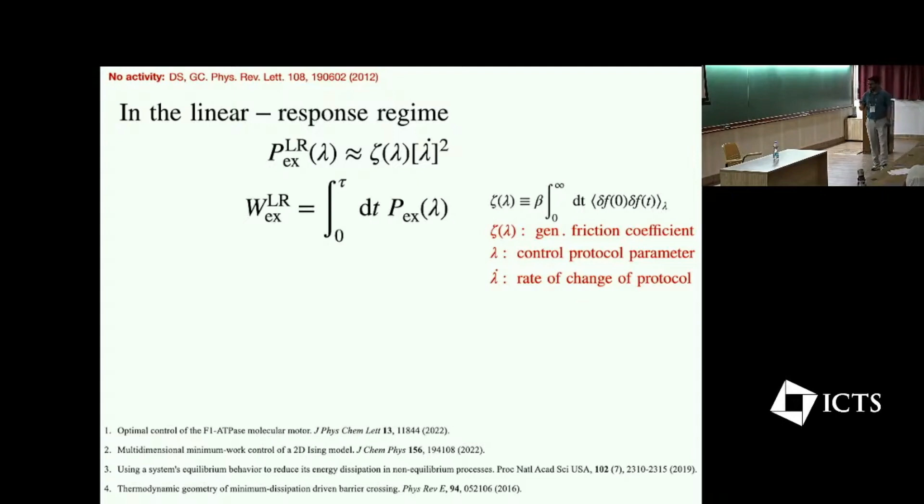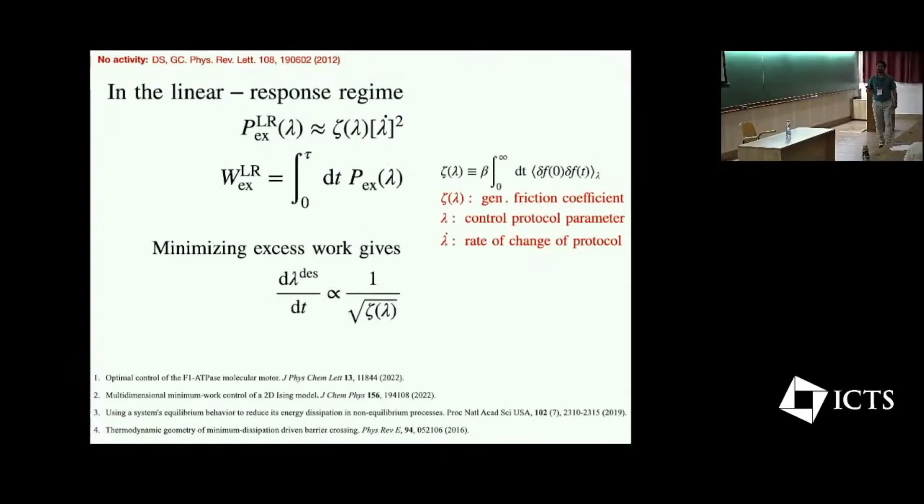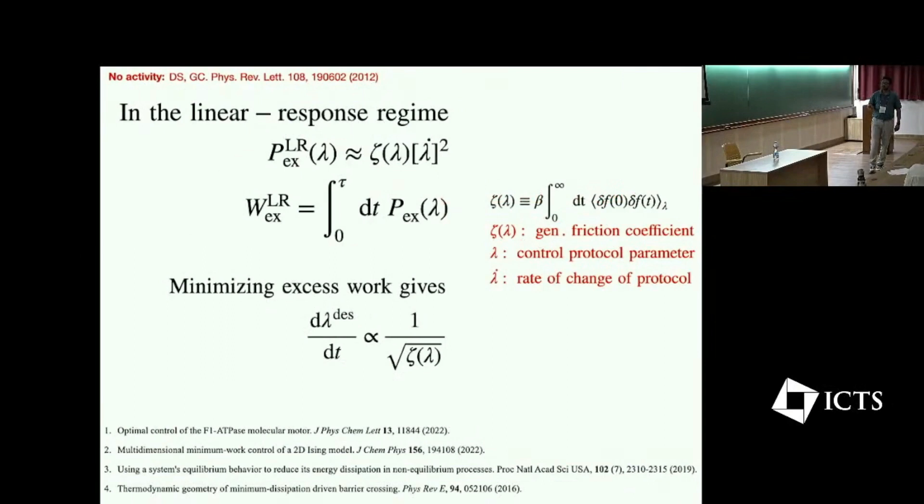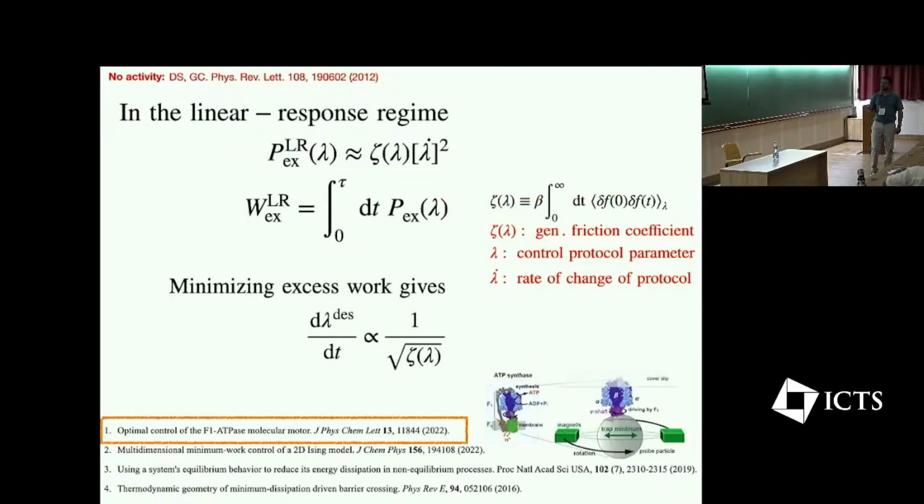And W_ex is the excess work which is time integral of this excess power. Now if I plug this here, this is basically a simple minimization problem, and by minimizing that excess work I will get that optimal protocol speed which is inversely proportional to the square root of this friction coefficient. So whenever the friction coefficient is larger I have to drive slower, otherwise I can drive faster. So this framework has been used in a couple of other studies, and for instance recently we used this framework to drive the F1 ATP synthase molecular motor to synthesize ATP molecule at low dissipation cost.